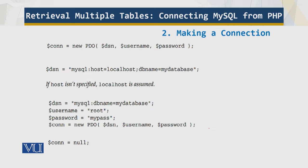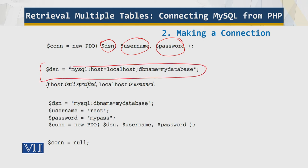Now, how do we make a connection? The connection consists of three parts: the DSN, the username, and the password. The DSN — Database Source Name — is simply a string that describes attributes of the connection, such as the type of database system, the location of the database, and the database name. For example, a DSN can connect to a MySQL database called 'my_database' running on the same machine as the PHP engine. If the host isn't specified, it defaults to localhost.